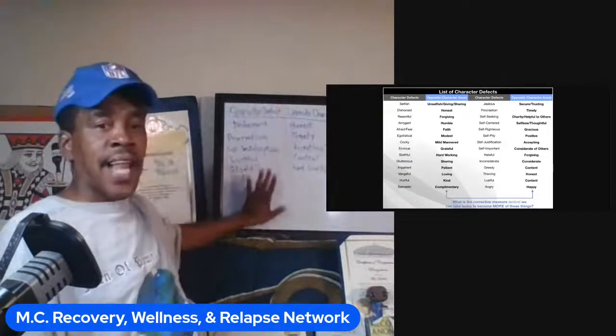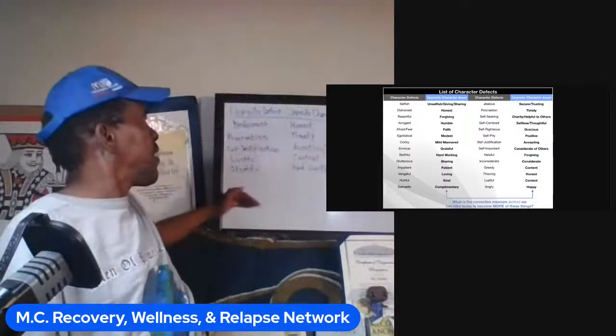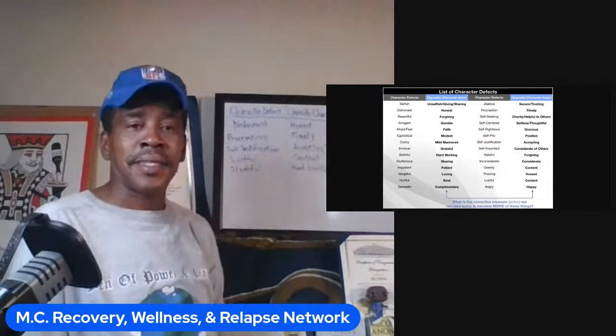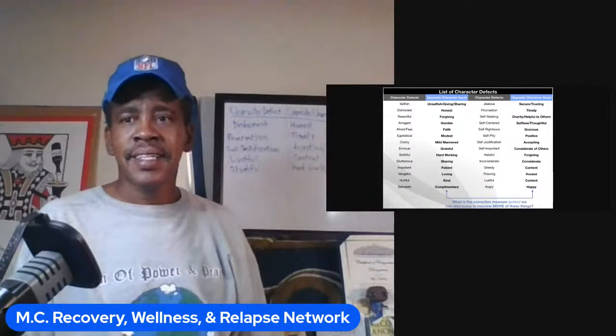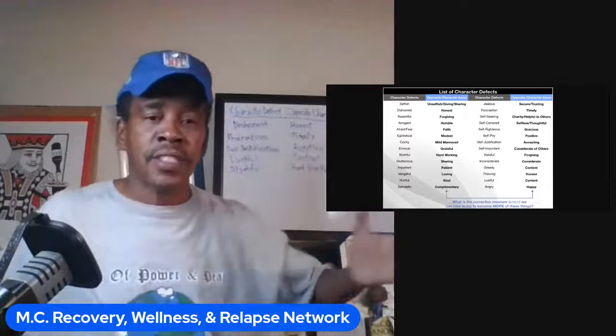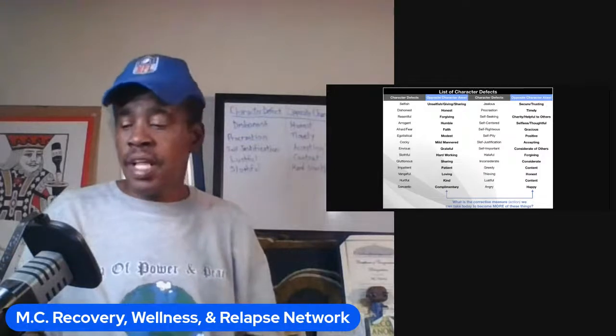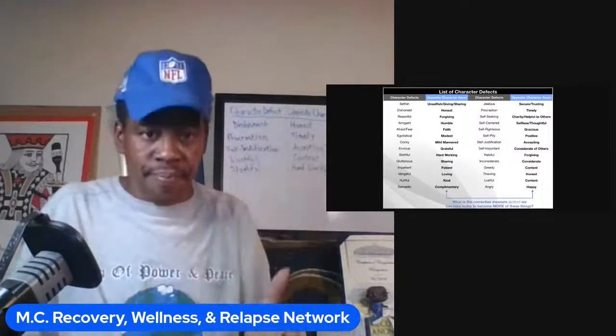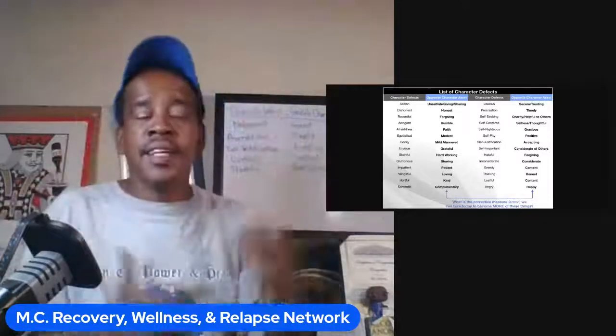Right up here is the character defect sheet — here's the defect of characters and here's the opposite of character defects. Dishonest and honesty. Back in early recovery, way before step one, we all can remember — some of us maybe accidentally still do it — where we'd rather come up with a lie.